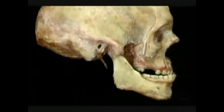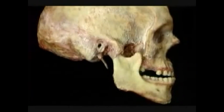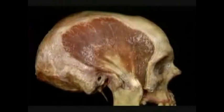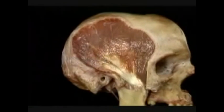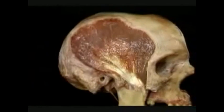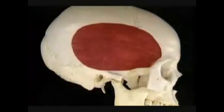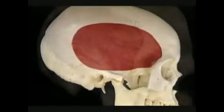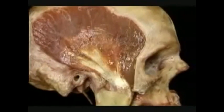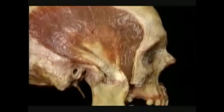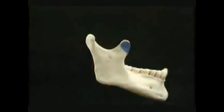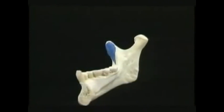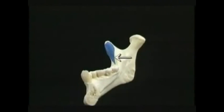Before adding the next muscle, the temporalis, to the picture, we'll put the coronoid process back in place since that's where the temporalis inserts. Here's the temporalis, the largest of the muscles of mastication. It's shaped like a fan. The temporalis arises from the wide area on the side of the skull that lies within the temporal line. The fibers converge from above and from behind on the coronoid process, inserting on the outer and inner aspects of the coronoid process and also on the anterior part of the ramus of the mandible.